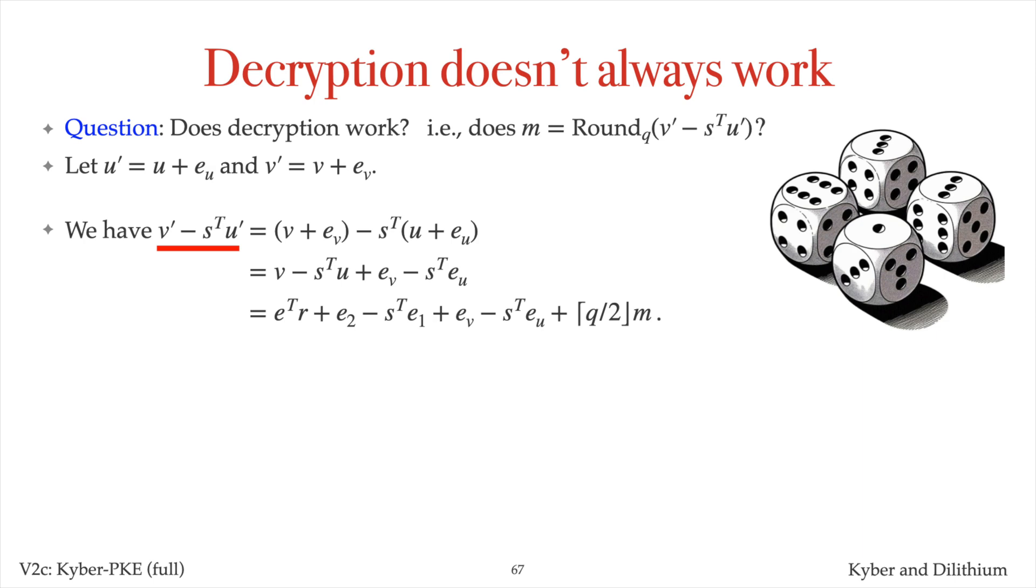Now during decryption, Alice computes V' minus S transpose times U'. I have made substitutions for V' and U' here. Expanding and simplifying, as was done on slide 53, gives this expression.